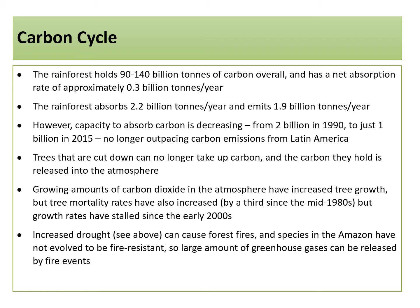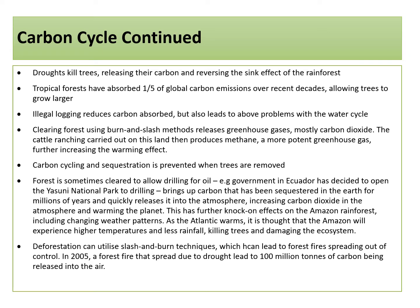Increased drought can cause forest fires, and species in the Amazon have not evolved to be fire resistant, so large amounts of greenhouse gases can be released by fire events. Droughts kill trees, which releases their carbon and reduces the sink effect of the rainforest. Tropical forests have so far absorbed one-fifth of global carbon emissions, which allows the trees to grow larger. Illegal logging reduces the carbon absorbed, but also leads to the problems described earlier with the water cycle. Clearing forests using slash and burn methods releases greenhouse gases, mostly carbon dioxide. The cattle ranching carried out on this land then produces methane, a more potent greenhouse gas, further increasing the warming effect on the atmosphere.